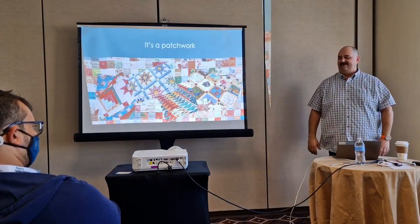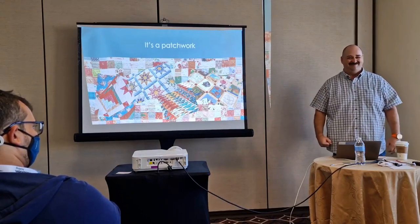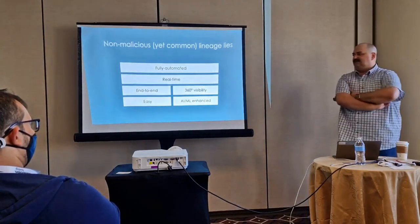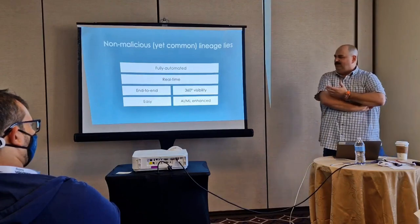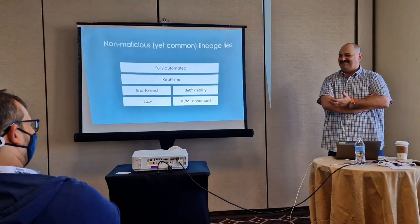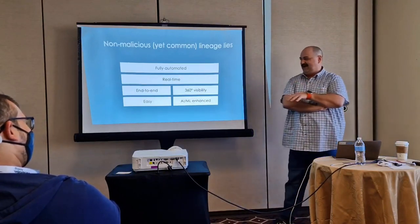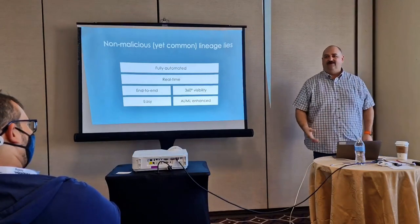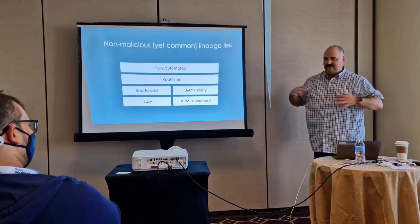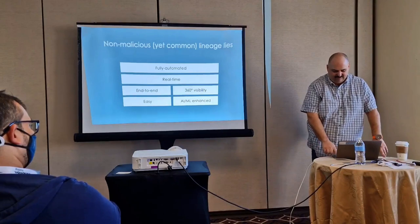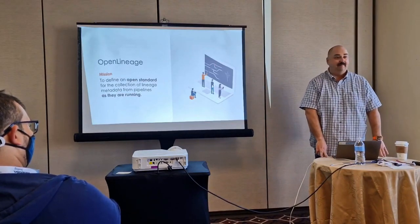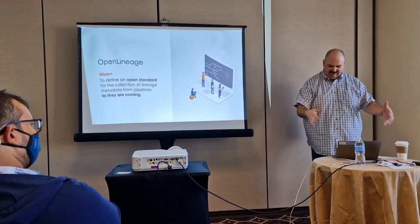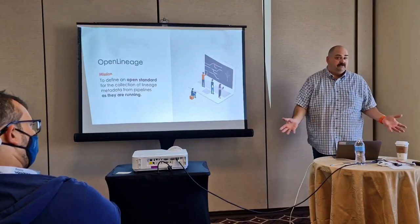I think lineage is the same way — as the pipelines get more complicated and nuanced, the lineage observation has to follow suit. It requires a bunch of tactics. I hear a lot of common lies about lineage, particularly from commercial vendors. Anyone who tells you they're going to get you fully automated, real-time, end-to-end lineage across everything is lying to you — they may be able to do it in a very scoped way. This is the argument for an open standard: there's really nothing to be gained by competing on the way lineage metadata is collected. There's plenty of room for competition and innovation on what you do with the metadata, but I think there's something to be gained by standardization in collection.